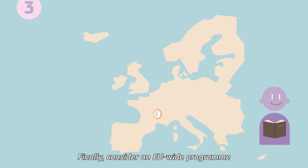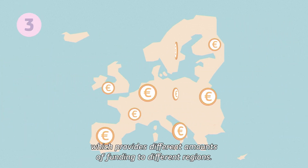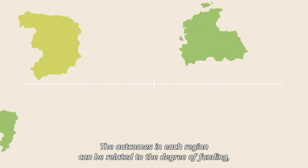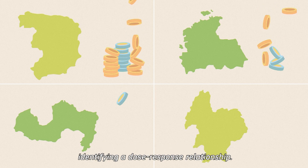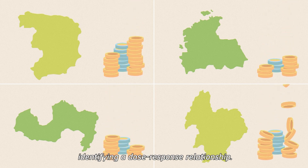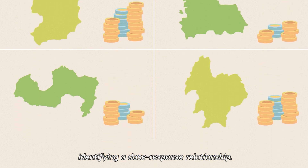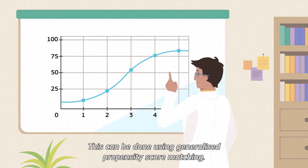Finally, consider an EU-wide programme which provides different amounts of funding to different regions. The outcomes in each region can be related to the degree of funding, identifying a dose-response relationship. This can be done using generalized propensity score matching.